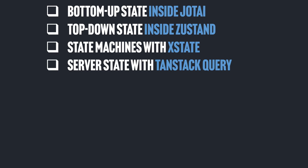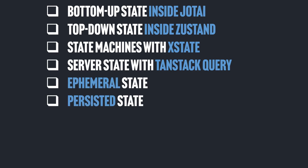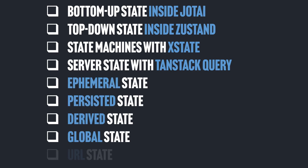We'll think about the various types of state: ephemeral state, persisted state, derived state, global state, and URL state — all of that built on top of an understanding of how React really works.